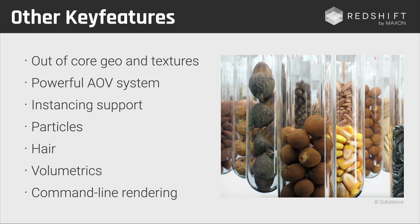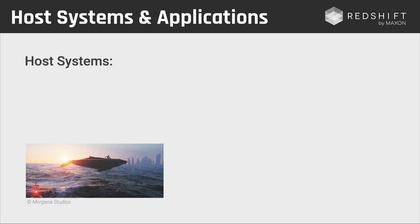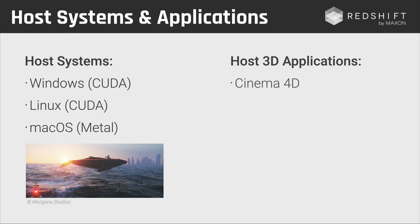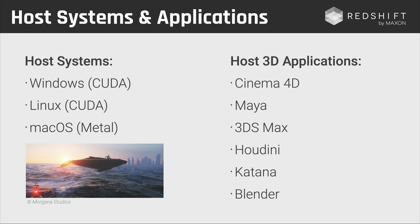Which host systems and applications are supported by Redshift? Redshift is available for Windows, Linux, and macOS. On Windows and Linux it is based on CUDA, so you need an NVIDIA graphics card. On macOS, Redshift uses Metal, so you need an AMD card. The macOS version is currently in beta and requires Big Sur, but it already works like a charm. The supported host applications are Cinema 4D, Maya, 3ds Max, Houdini, Katana, and Blender — with the Blender version also currently in beta.